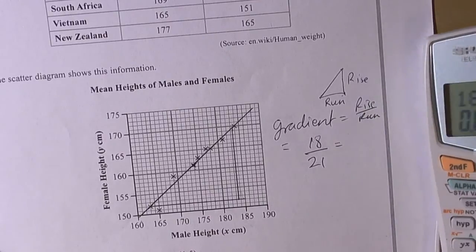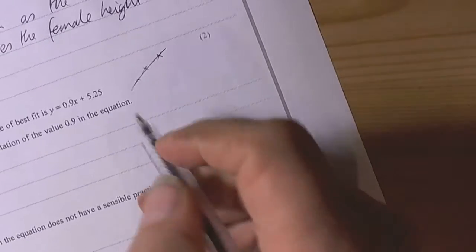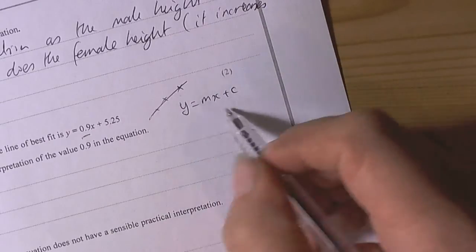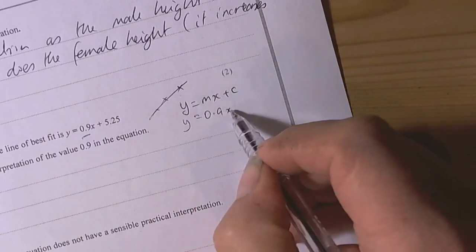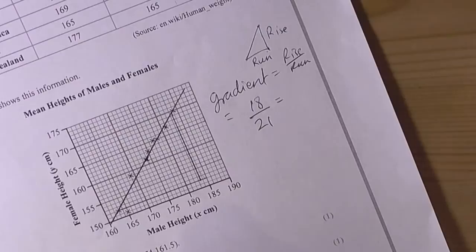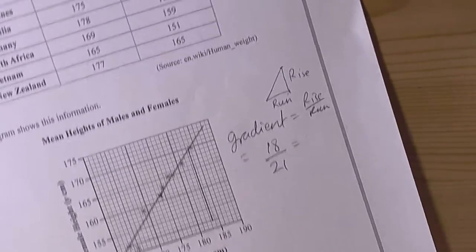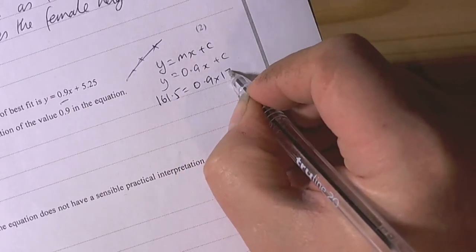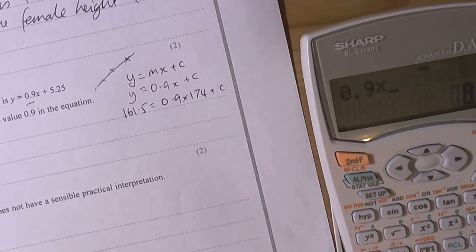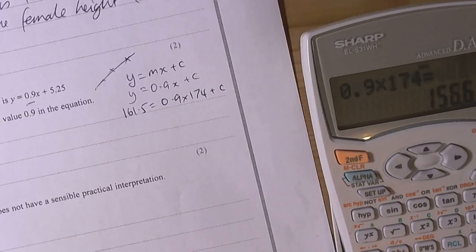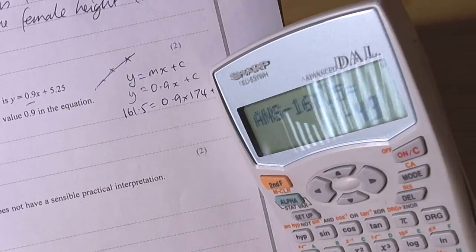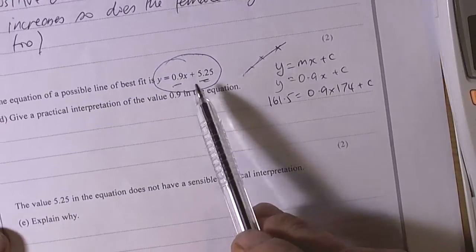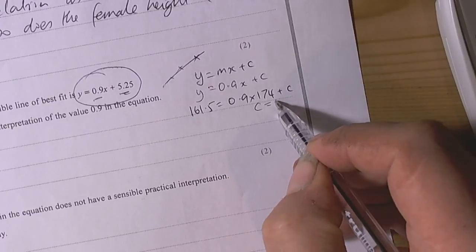18 divided by 21 equals 0.857, rounded to one decimal place is 0.9, so that's where they got the 0.9 from. The 5.25 - if you remember from y equals mx plus c, we've calculated the gradient as 0.9, so we can choose any point, probably the mean point because that's a calculated value. We're given 174 and 161.5, so we're going to say that 161.5 equals 0.9 times 174 plus some value. 0.9 times 174 needs to be taken away from 161.5. That gives us about 4.9. Well, they've given us the value of 5.25, so we have to use that equation because that's the one from the exam question, but that's how they calculated it. We'd have found the c value was 4.9 from that method.